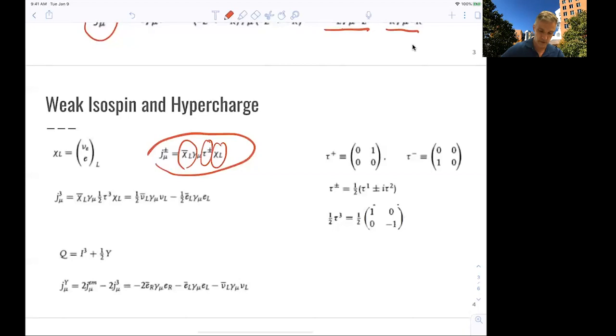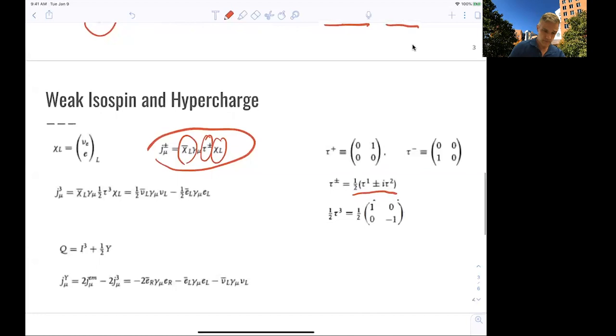We introduced a new matrix here, tau plus and tau minus. They're simply combinations of tau 1 and tau 2, which are the Pauli matrices. It's just relabeling as well. So there's a lot of relabeling going on. But we have simply written this positively charged weak current and negatively charged current, where we rotate a neutrino into an electron or an electron into a neutrino using the weak interaction.